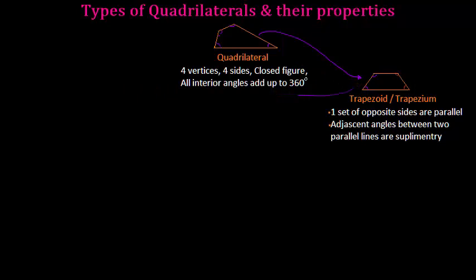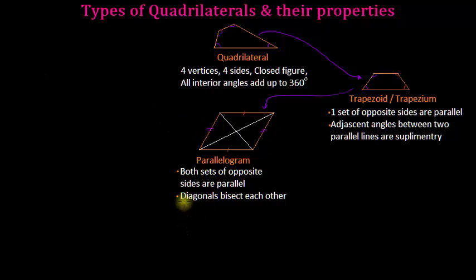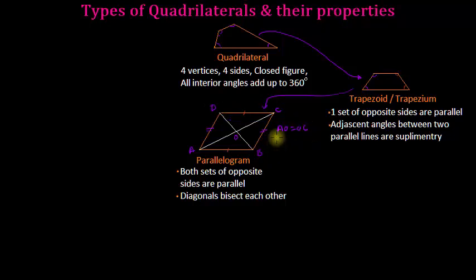If we make both sets of opposite sides parallel, we get a parallelogram. It inherits all properties of the trapezoid and additionally has both sets of opposite sides parallel and equal. It also has the property that diagonals bisect each other — if we name the vertices A, B, C, D and the intersection point O, then AO equals OC and DO equals OB.